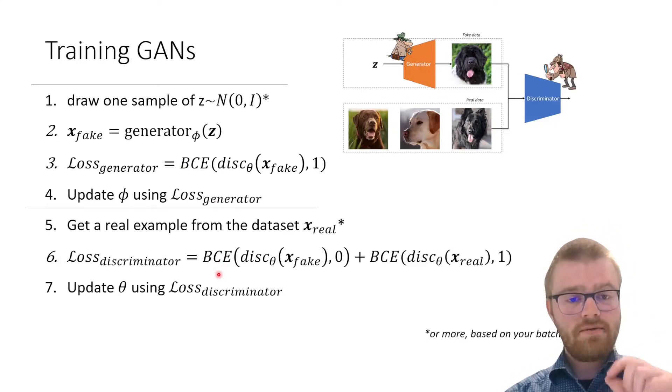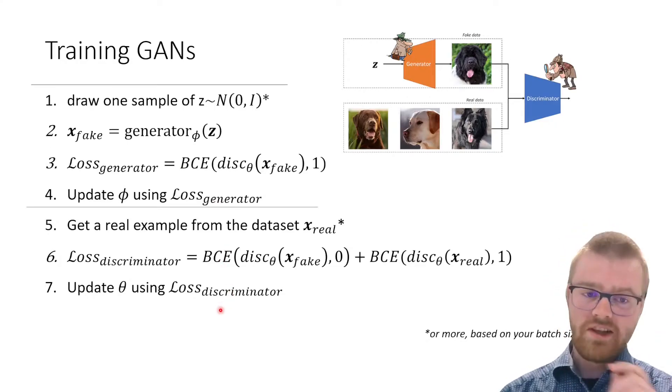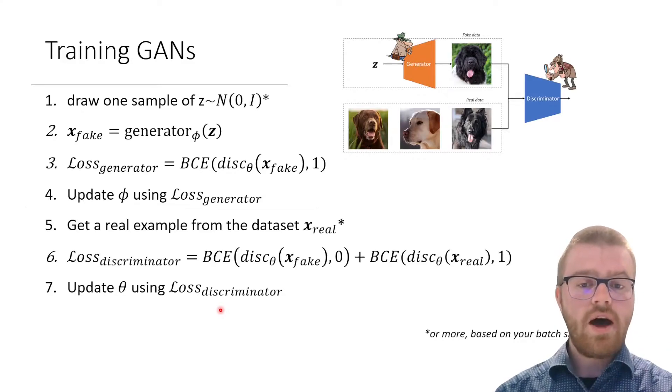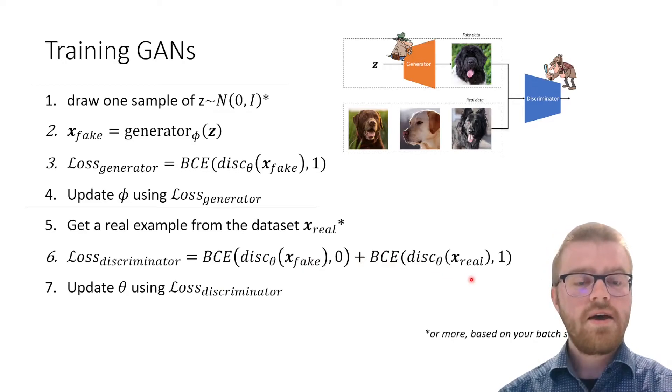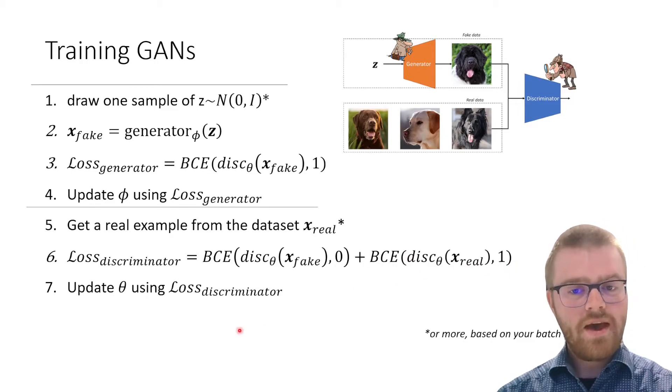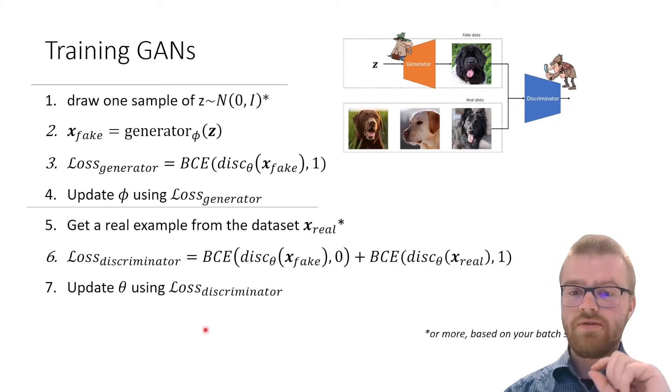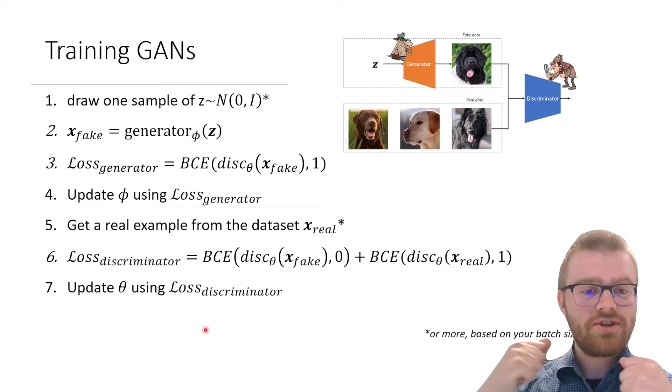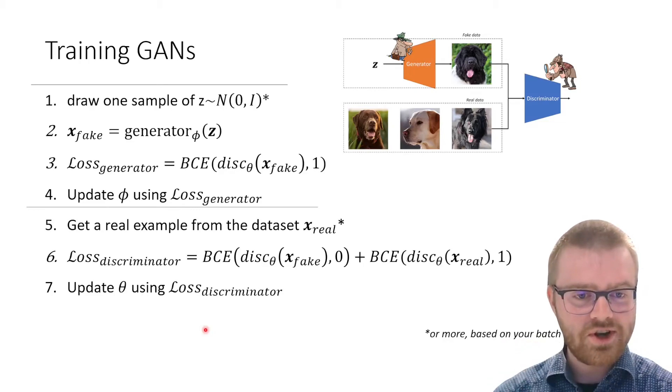In the second step, we also get an example from the real dataset and create a second loss function. Now with binary cross entropy for the fake and real data, but now with the correct labels. So for fake should be zero, and for real should be one. Then we update the parameters of the discriminator using this loss. And now we can see how these two losses are competing with each other.